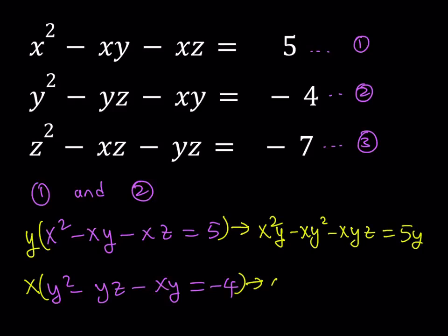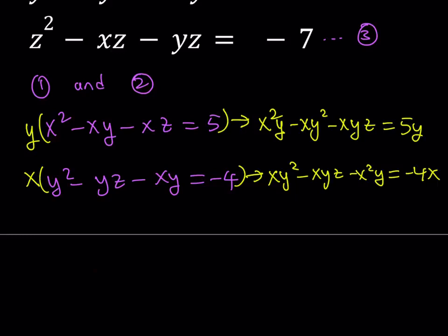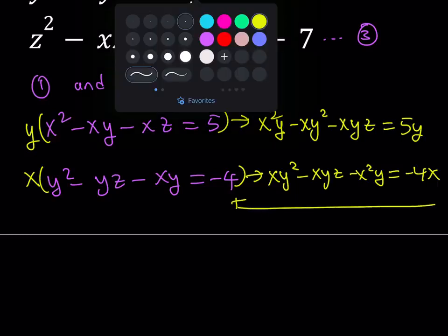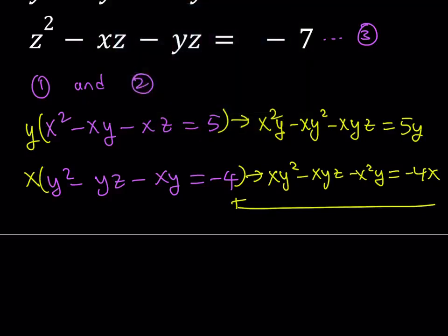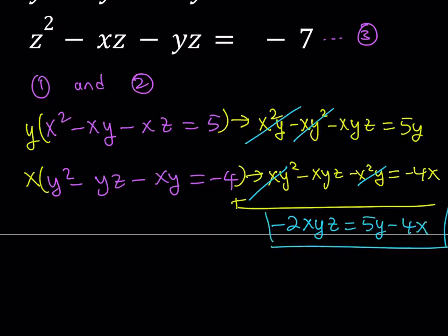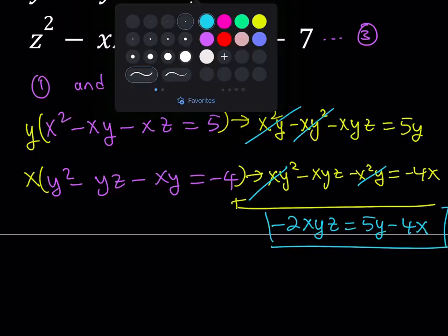The second equation gives: xy squared minus xyz minus x squared y equals negative 4x. If we add these two equations side by side, x squared y minus x squared y cancels to 0, xy squared minus xy squared cancels to 0, and we end up with negative 2xyz equals 5y minus 4x. Let's save that and use it when we're done with all the pairs.